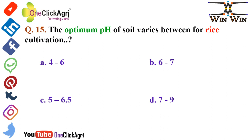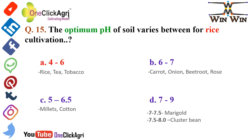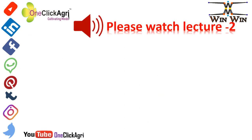The optimum soil pH for rice cultivation varies. Two other crops grown in that particular soil pH range are tea and tobacco. Another pH range is 6 to 7, and also 7 to 7.2.